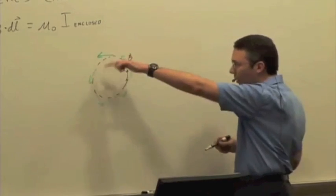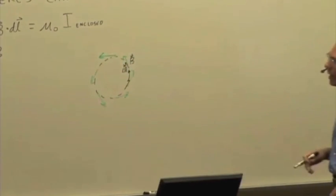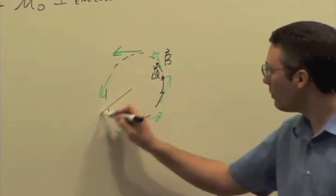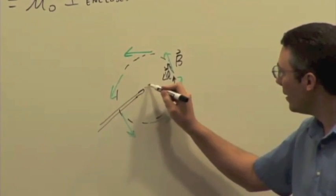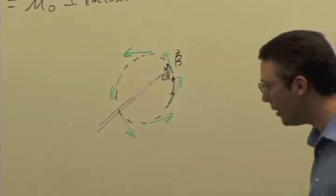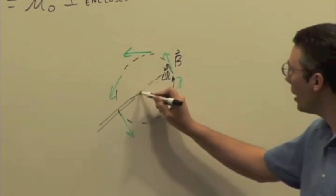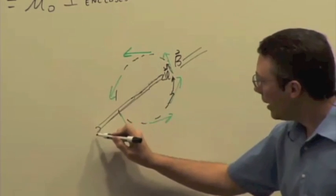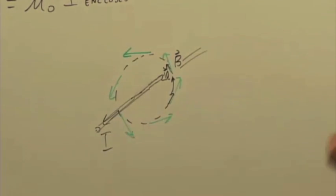Then when you add it up round trip, you get positive contribution, and so that's telling you that there is a current passing through the center, or not even necessarily through the center, just somewhere in this loop. But for the symmetric arrangement, it was the center. And so that was conventional current coming out towards us.